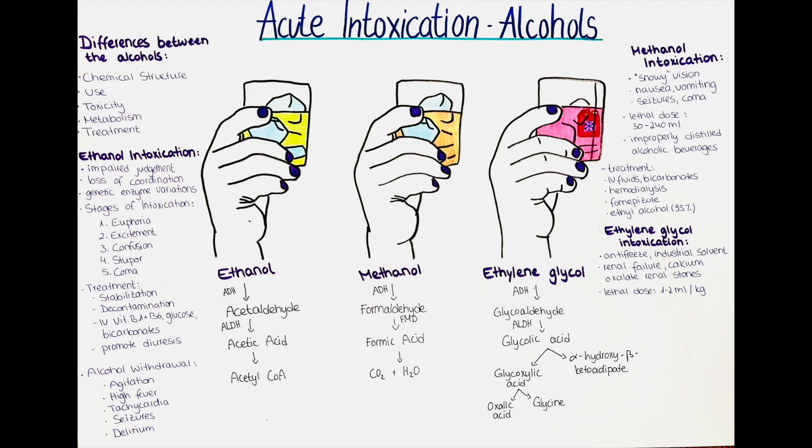The fifth and last difference is the treatment. The treatment for acute methanol and ethylene glycol poisoning is different from that for ethanol intoxication. In the case of methanol and ethylene glycol, antidotes such as fomepizole or ethanol are given to slow down the metabolism of these substances and reduce the formation of toxic by-products. In contrast, there is no specific antidote for ethanol intoxication, and treatment usually involves supportive care such as IV fluids and respiratory support as needed.